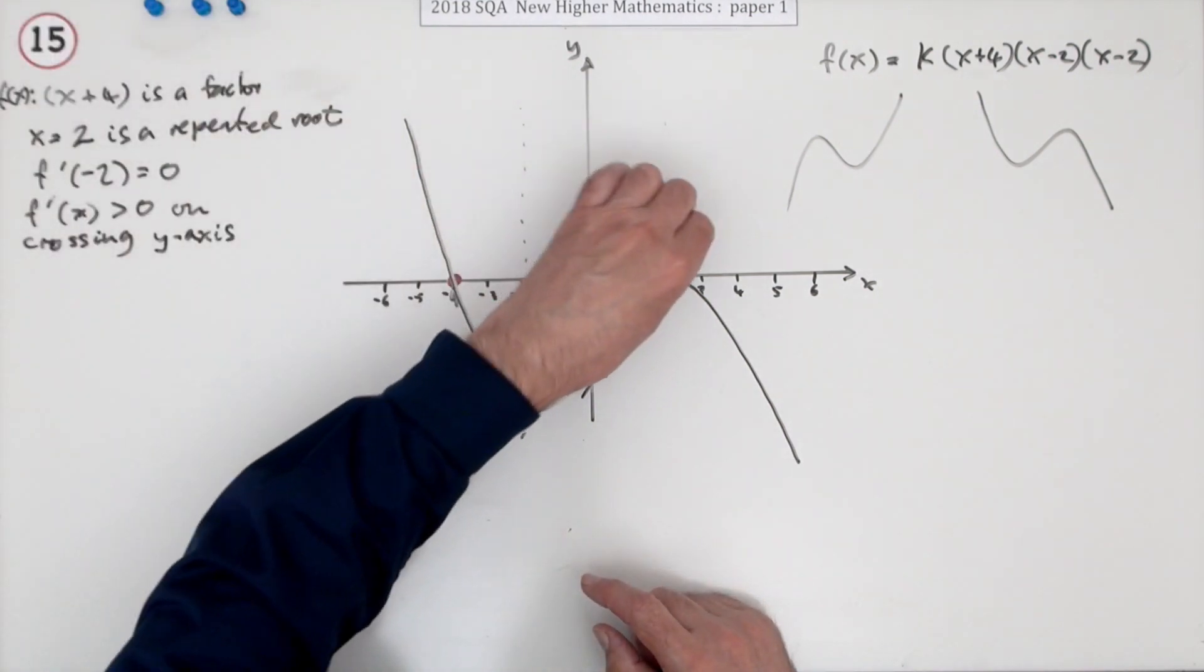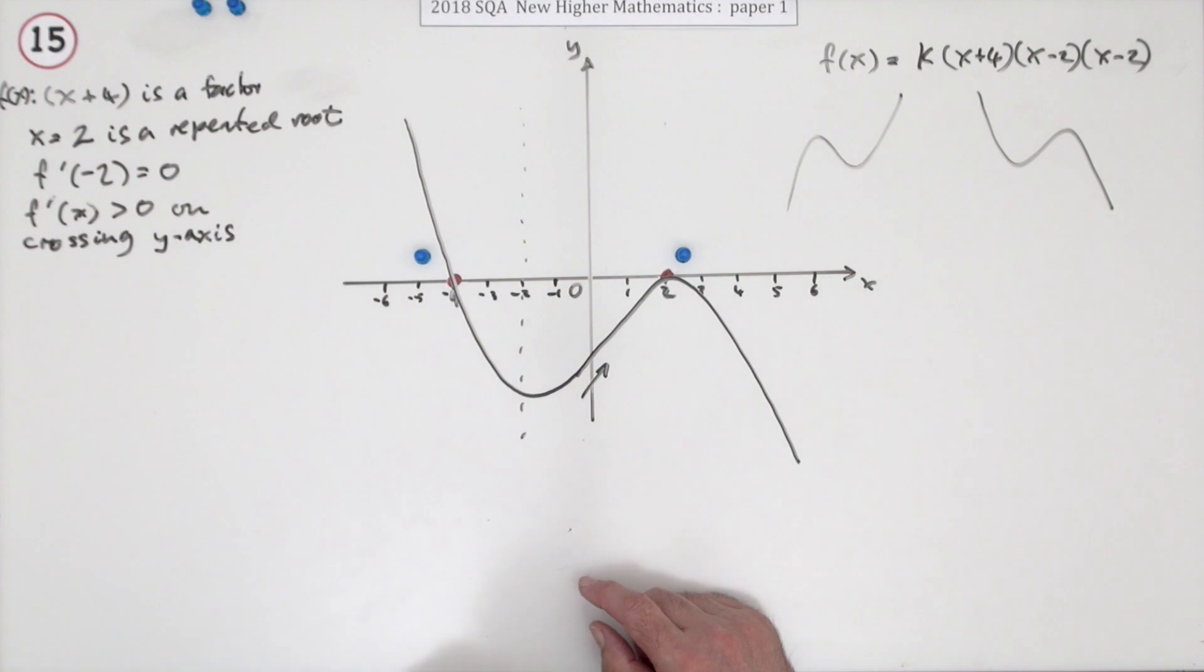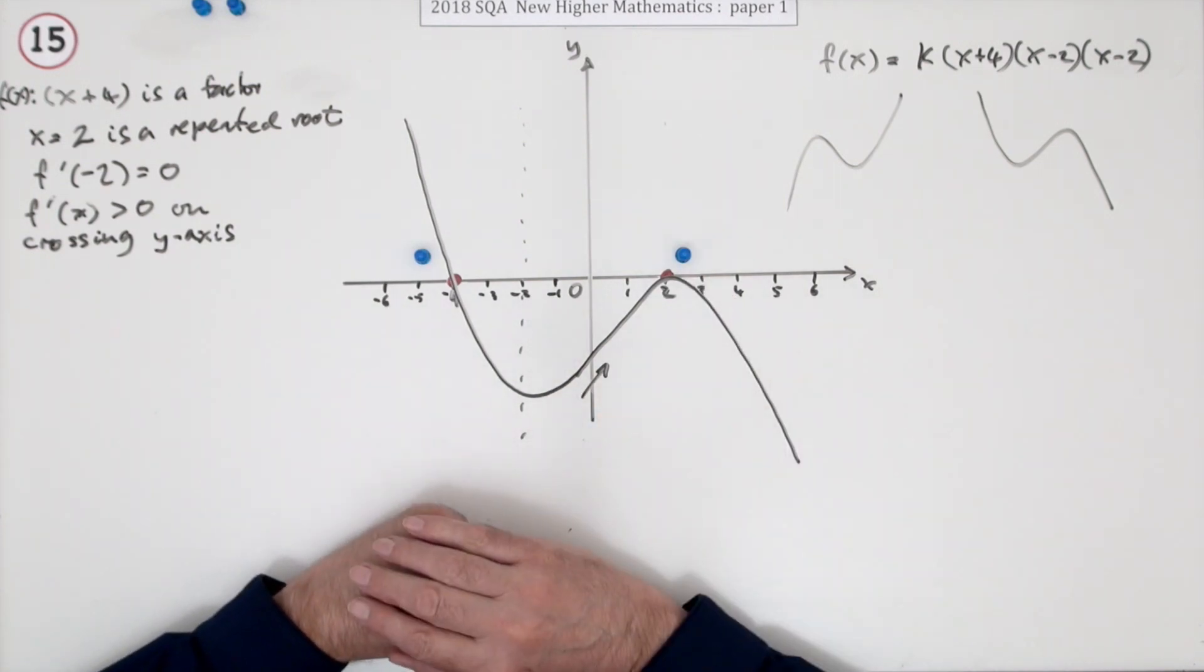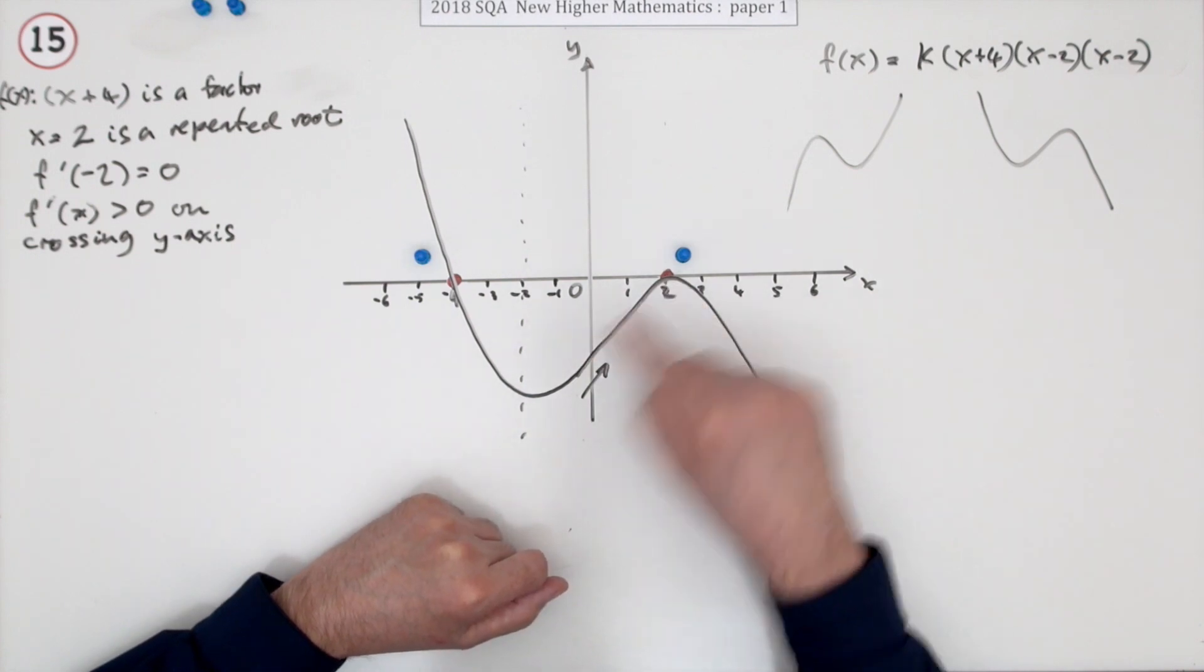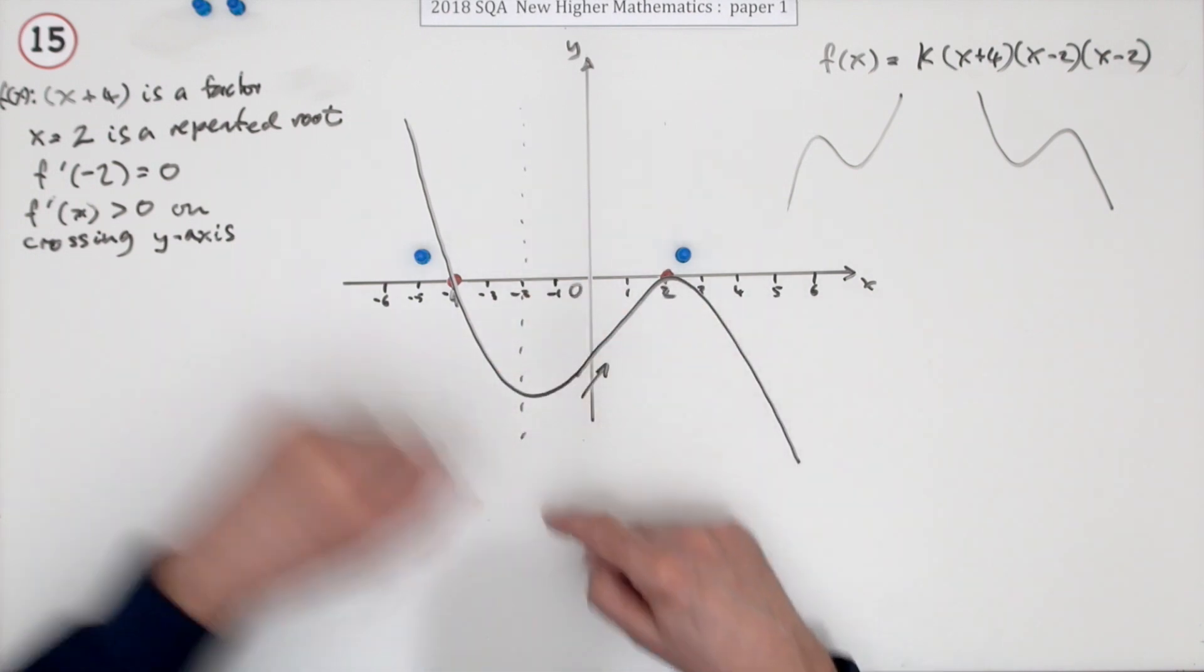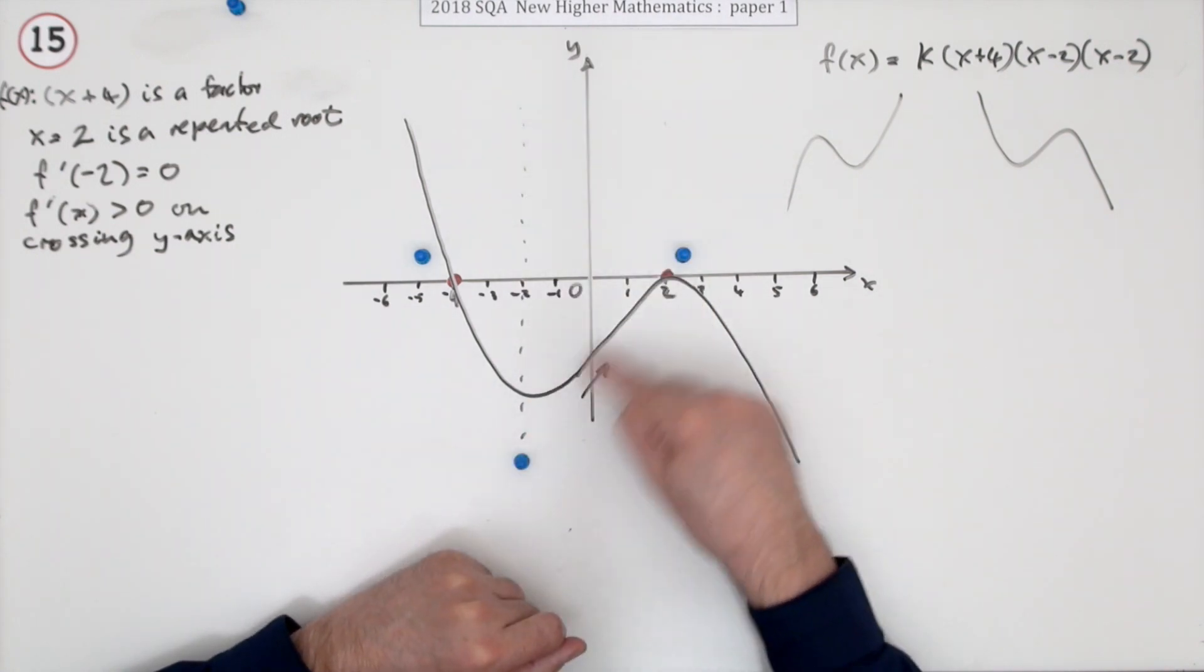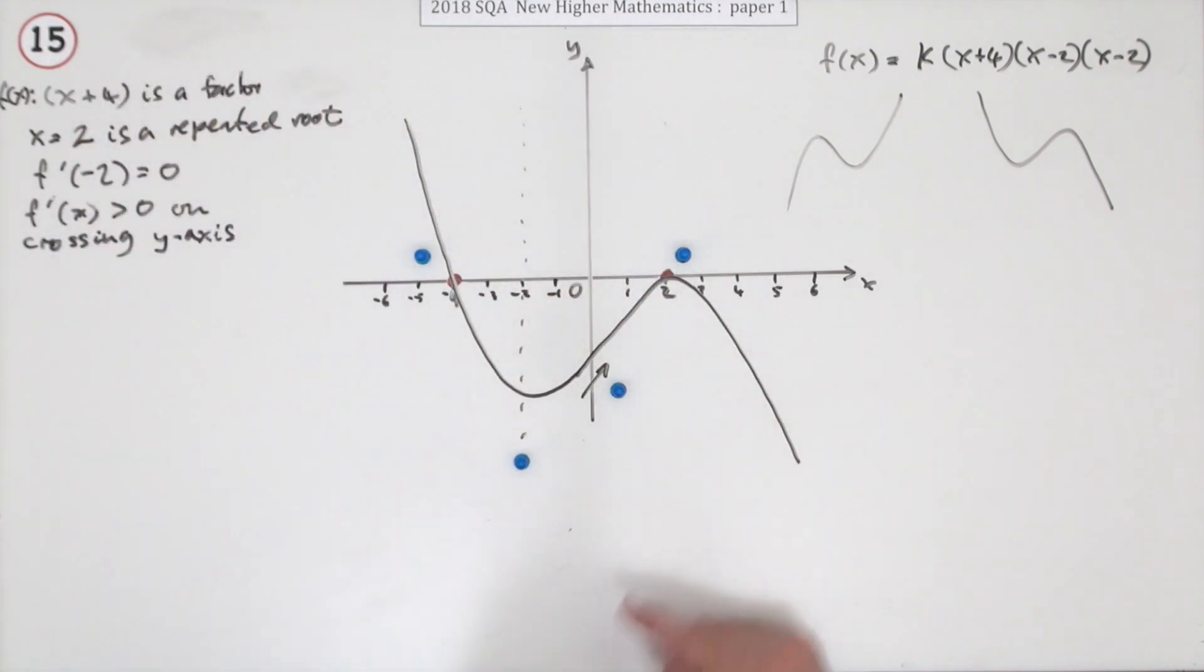Because showing the marks is difficult, these two are easy. That's a factor, so it crosses at negative 4. That's a repeated root, so it's a bounce, a tangent at 2. Not so easy showing this bit. I should put a dotted line in deliberately, and then crossing the axis with the right orientation.